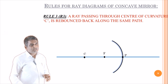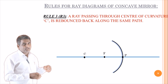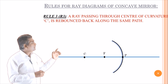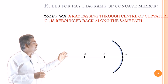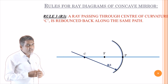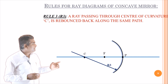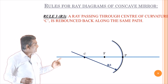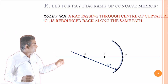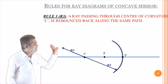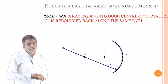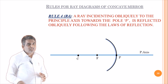Now the third rule R3: a ray passing through the center of curvature C rebounds back in the opposite direction. The light ray is incident along the direction of C, and here the angle of incidence is equal to zero. So it rebounds exactly back, because the normal also lies in the same direction.